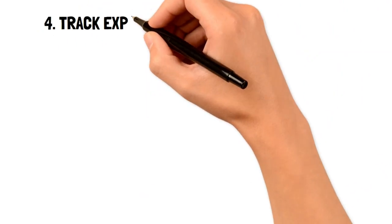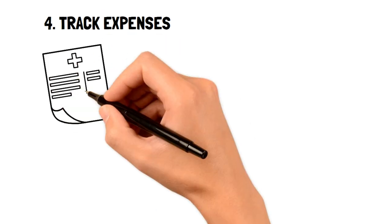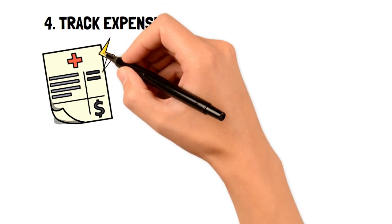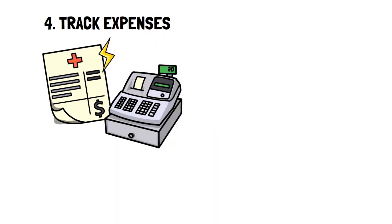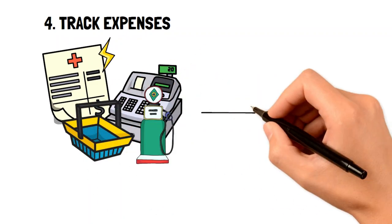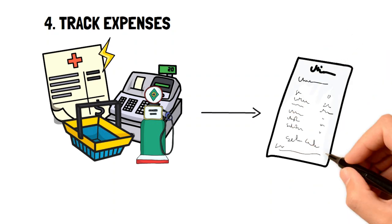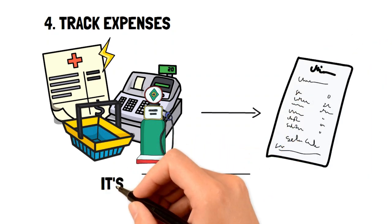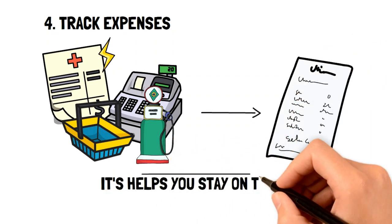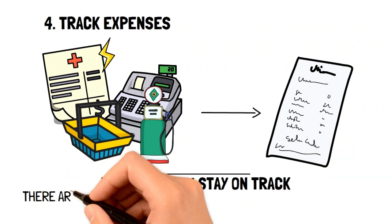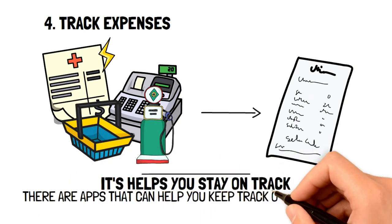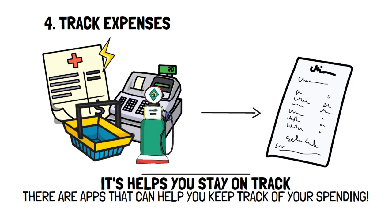4. Track expenses. If you aren't tracking your expenses, then you have no idea how much you're spending. Sadly, you won't have an exact number of how much debt you have either. So if you're looking to get rid of debt on a low income, then start tracking your expenses. There are tons of apps that can easily help you keep track of your spending, so you'll never miss a purchase regardless of how busy you are.